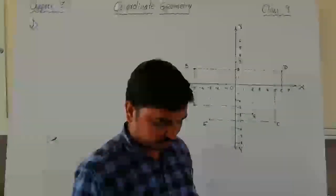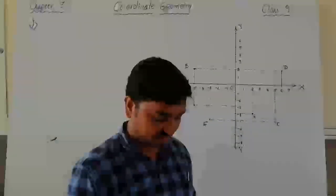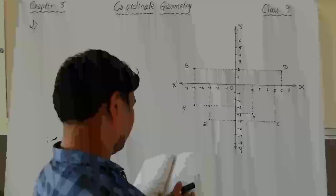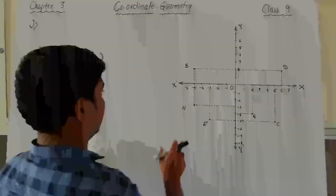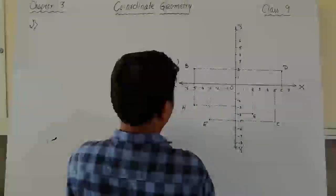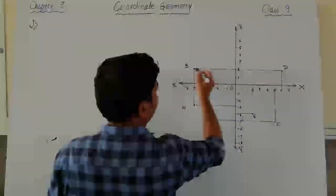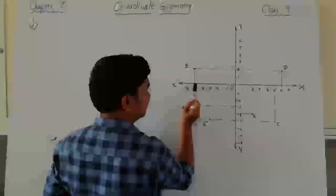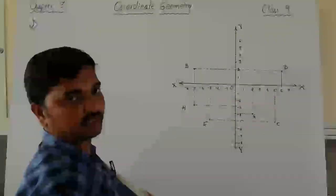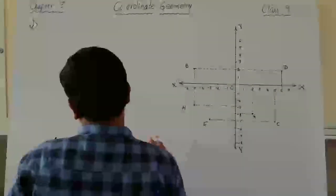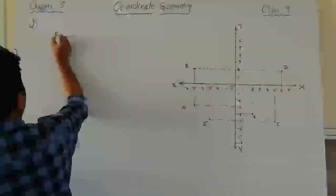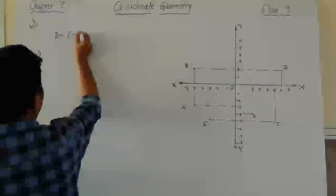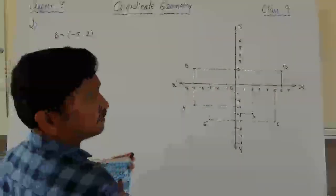Look at point B in the figure — it is located where the dotted lines intersect at minus 5 on the x-axis and 2 on the y-axis. So the coordinates of B are minus 5 comma 2. No need to write the plus sign, just write minus 5 comma 2.